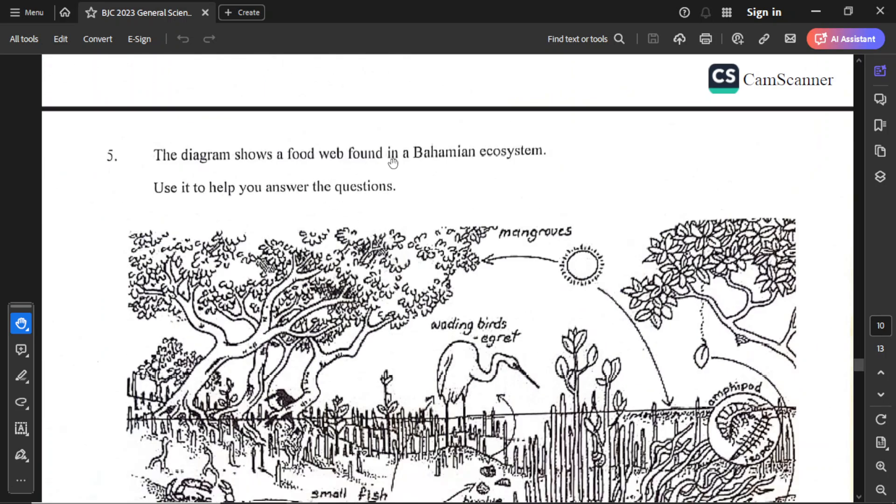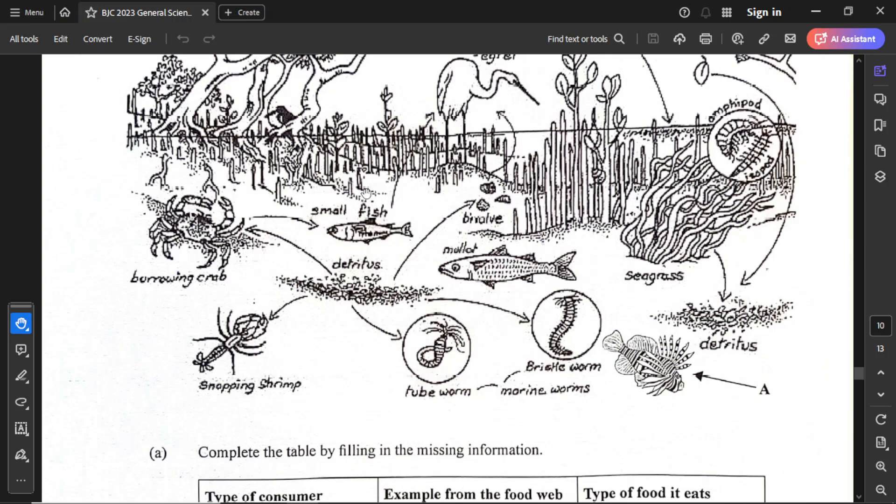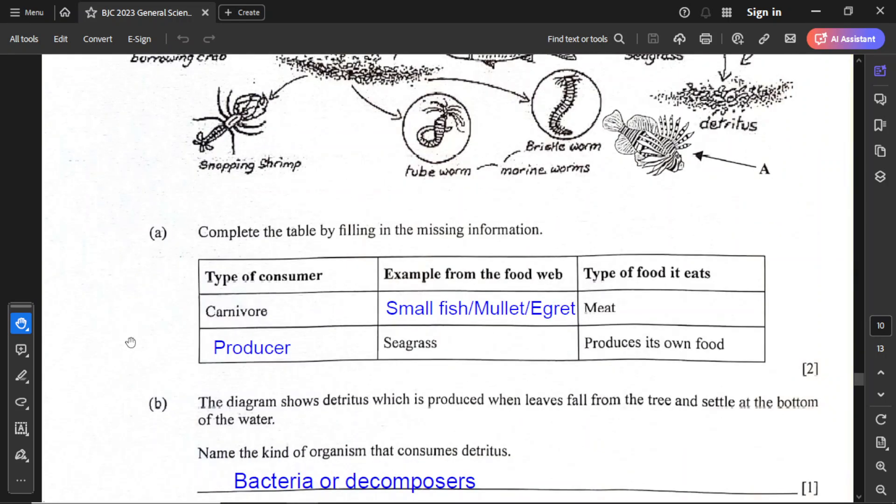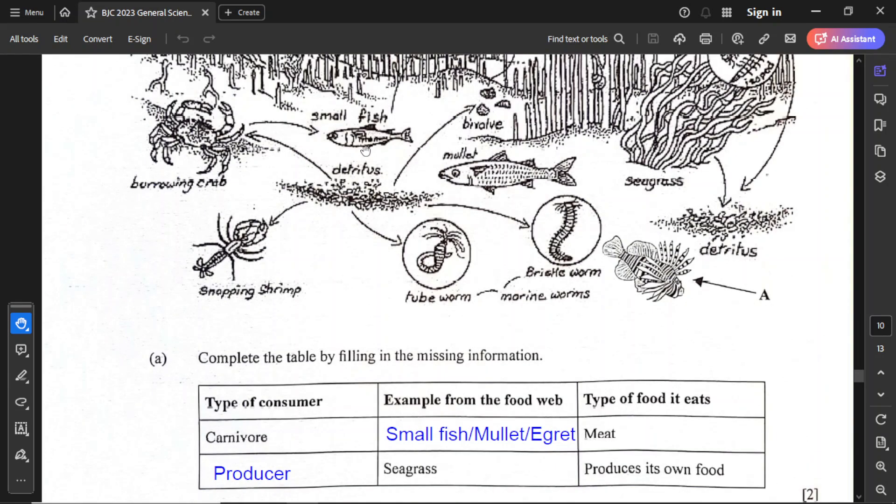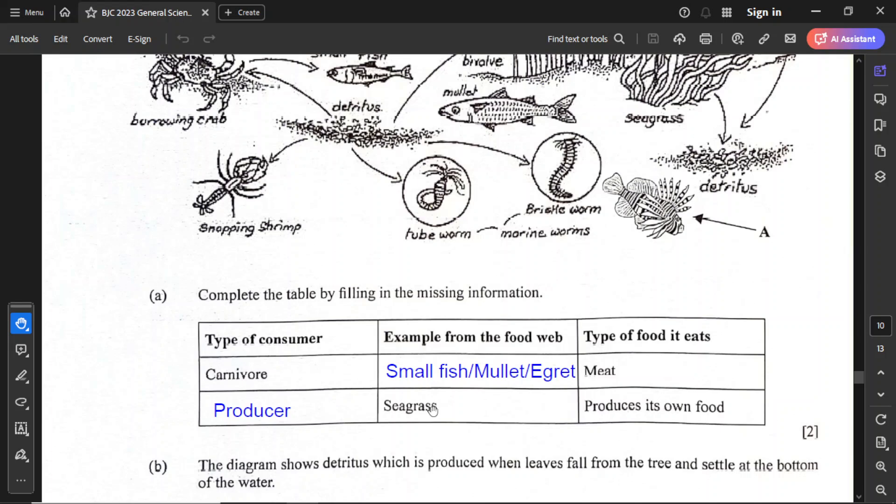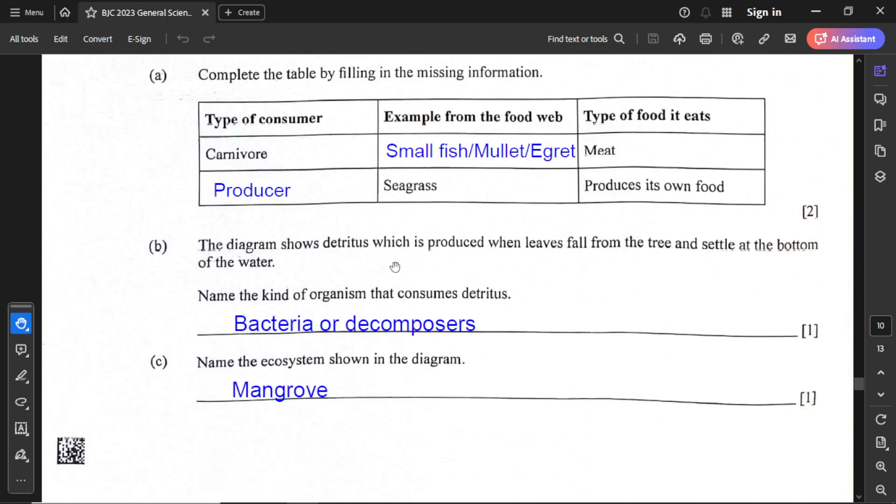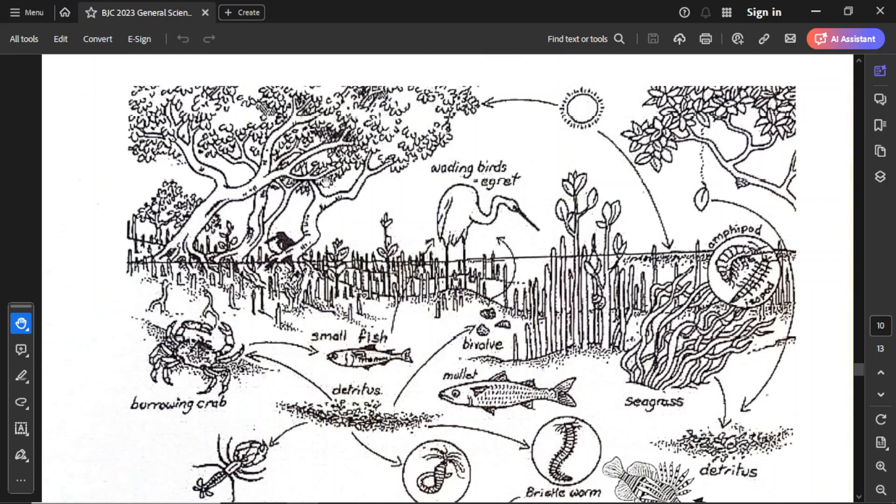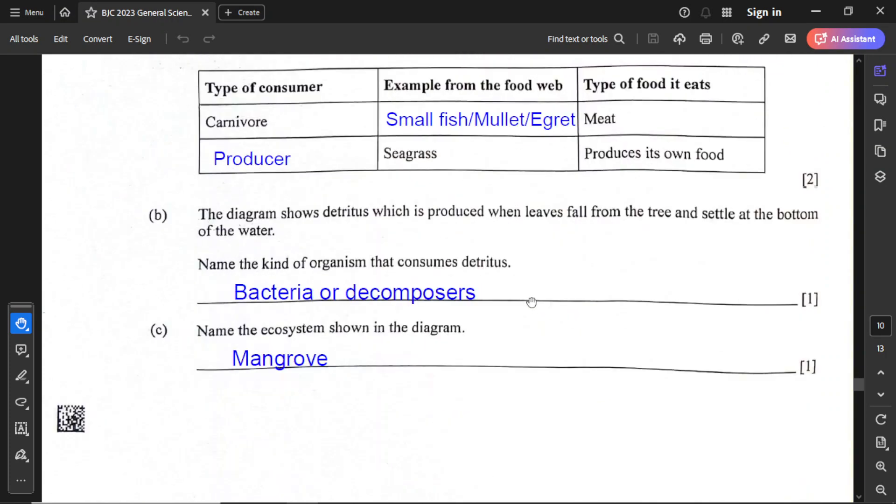For question number five, the diagram shows a food web found in a Bahamian ecosystem. Use it to help you answer the questions, and observe carefully the diagram. The first part is to complete the table by filling the missing information. Look here for carnivore. An example of carnivore could be anything that's eating another animal. The small fish which is eating the crab, we can have the mullet, and we also can have the lionfish as well. And we can also have the egret. Then here they have the seagrass, and seagrass is the example of a producer because it makes its own food. For part B, the diagram shows detritus, which is produced when leaves fall from the tree and settle at the bottom of the water. Name the kind of organism that consumes detritus, and that is bacteria or what we call decomposer. For part C, name the ecosystem shown in the diagram, and that is a mangrove ecosystem.